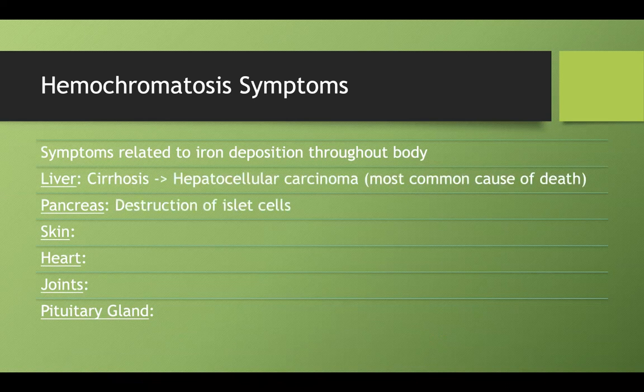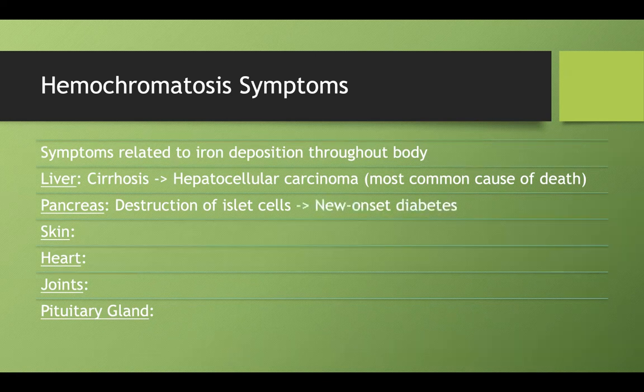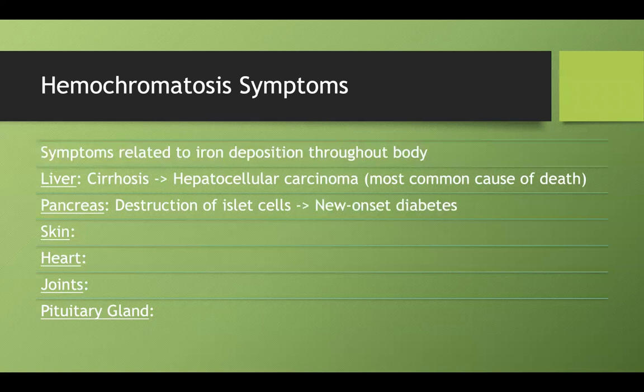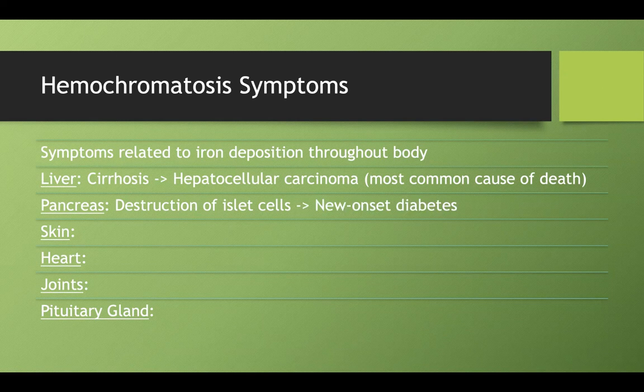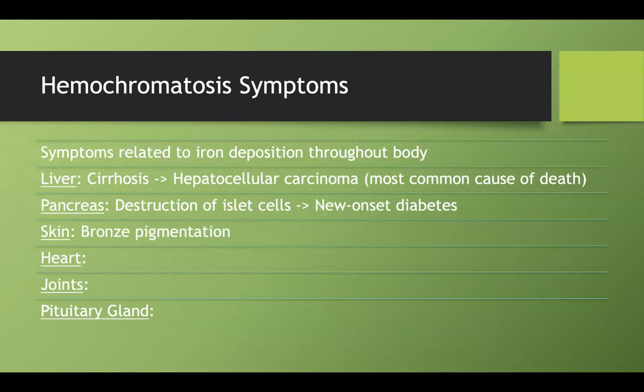In the pancreas, all that iron deposition can actually destroy your islets of Langerhans. We need our islets of Langerhans to produce beta cells. If you have a lack of beta cells because they're getting destroyed by all this iron deposition, you can end up with new onset diabetes. All the iron deposited in the skin causes this classic bronze pigmentation.